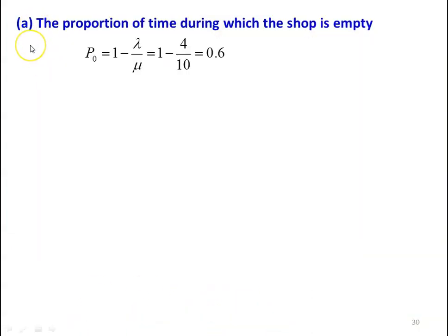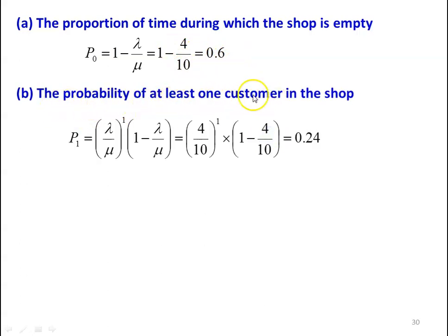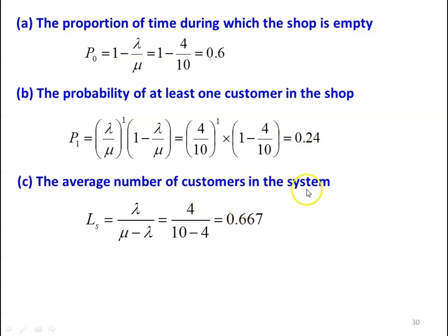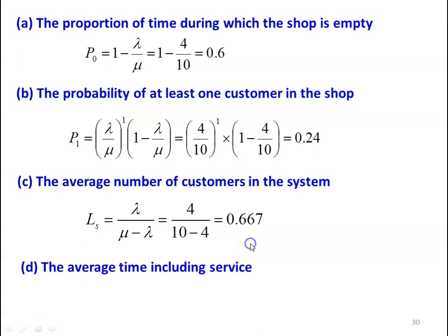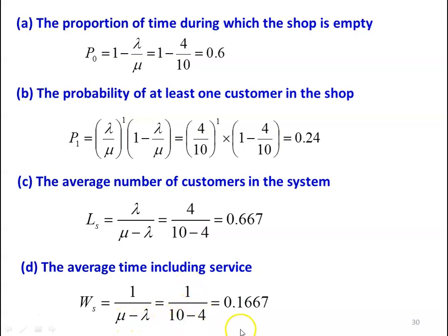For subdivision A, the proportion of time during which the shop is empty: P0 equals 1 minus lambda divided by mu, which is 1 minus 4 divided by 10 equals 0.6. For subdivision B, probability of at least one customer in the shop: P1 equals (lambda divided by mu) to the power 1 times (1 minus lambda divided by mu), which is (4 divided by 10) times (1 minus 4 divided by 10) equals 0.24. Average number of customers in the system: L equals lambda divided by (mu minus lambda), which is 4 divided by (10 minus 4) equals 0.667. Average time including service: W equals 1 divided by (mu minus lambda), which is 1 divided by (10 minus 4) equals 0.1667 hours.